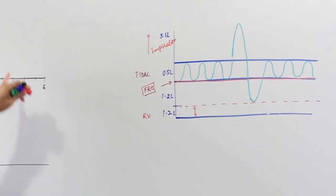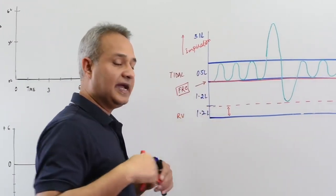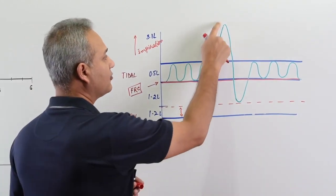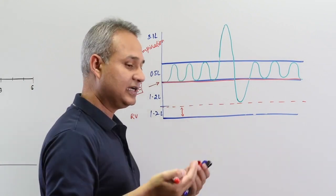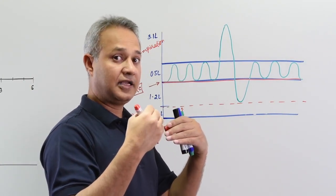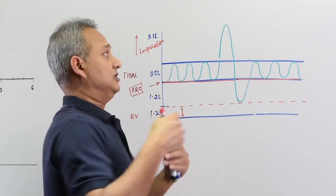This is important - upwards is inspiration because we will use the same concept in these graphs as well. Downwards is exhalation, expiration. This is of course inspiratory reserve volume.